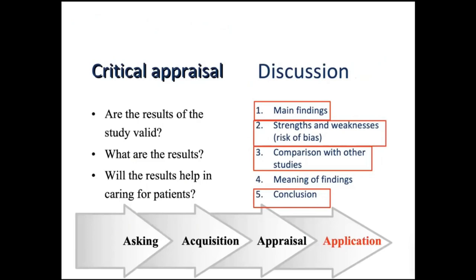This leads us to the last section, which is meanings of the findings. In the meaning of the findings, you've got to explain how this information is helpful for patients. You can also say something about how this information can be useful to guide future research. So here are the five paragraphs of discussion.